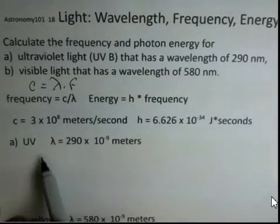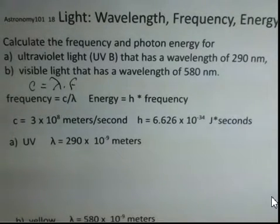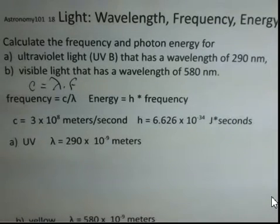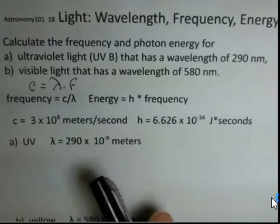And our first light is ultraviolet, just shorter than the violet is ultraviolet, and out of the range of human visibility but important for sunburns and such. So we have a wavelength 290 times 10 to the minus 9 meters. The power is minus 9.